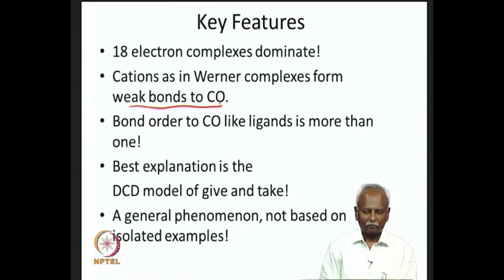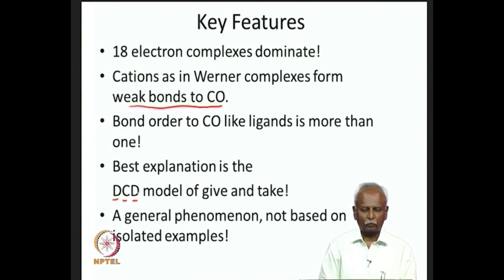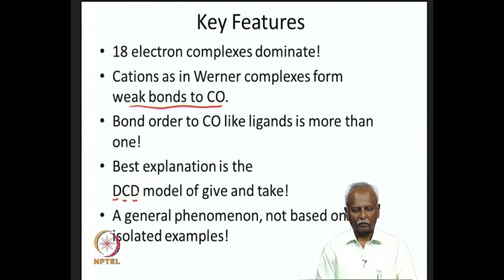The best explanation for all these observed factors with metal carbonyls is the DCD model, or the Dewar-Chatt-Duncanson model. These are the names of the three people — Dewar, Chatt, and Duncanson — who initially described this give-and-take sharing of electrons. The ligand gives electrons to the metal and the metal in turn gives electrons back to the ligand. This give-and-take phenomenon is synergistic, and it leads to a very stable situation in metal carbonyl chemistry.